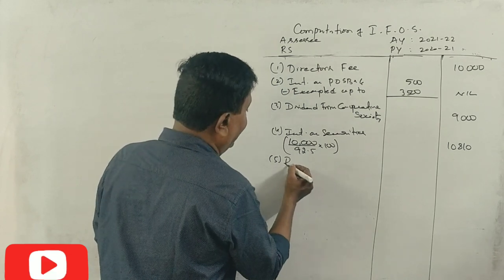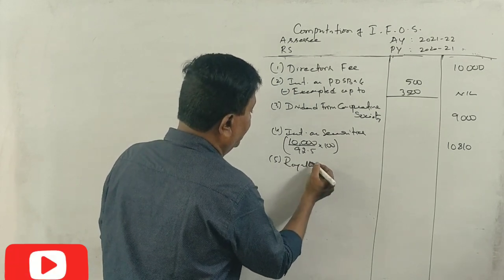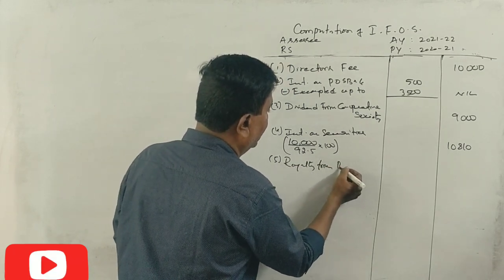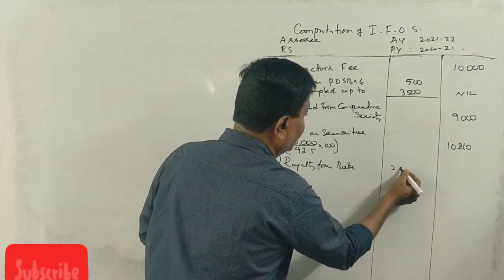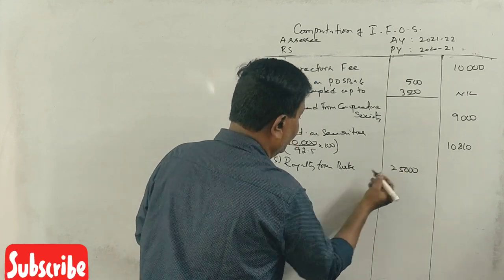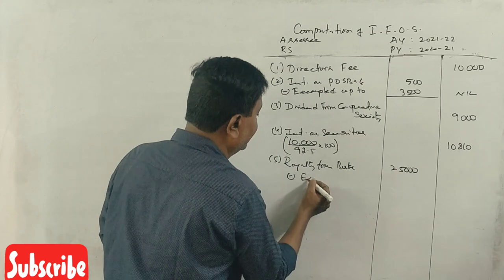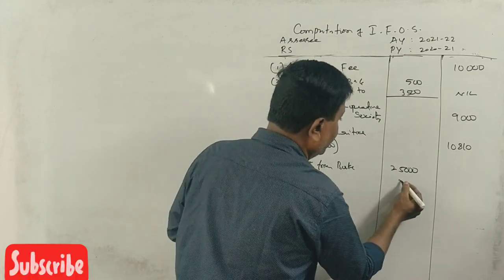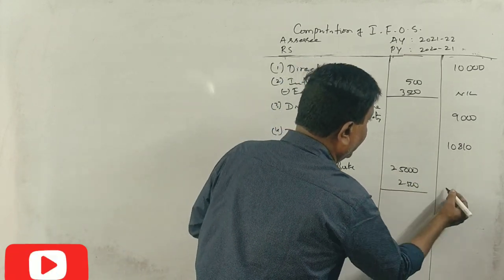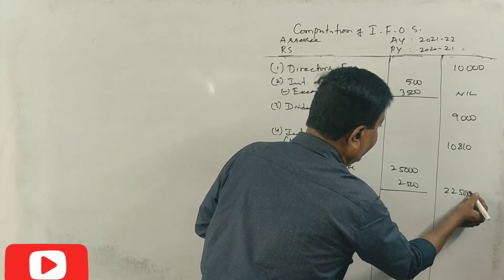So royalties from book, 25,000, less expenses, 2,500, that is 22,500 taxable.